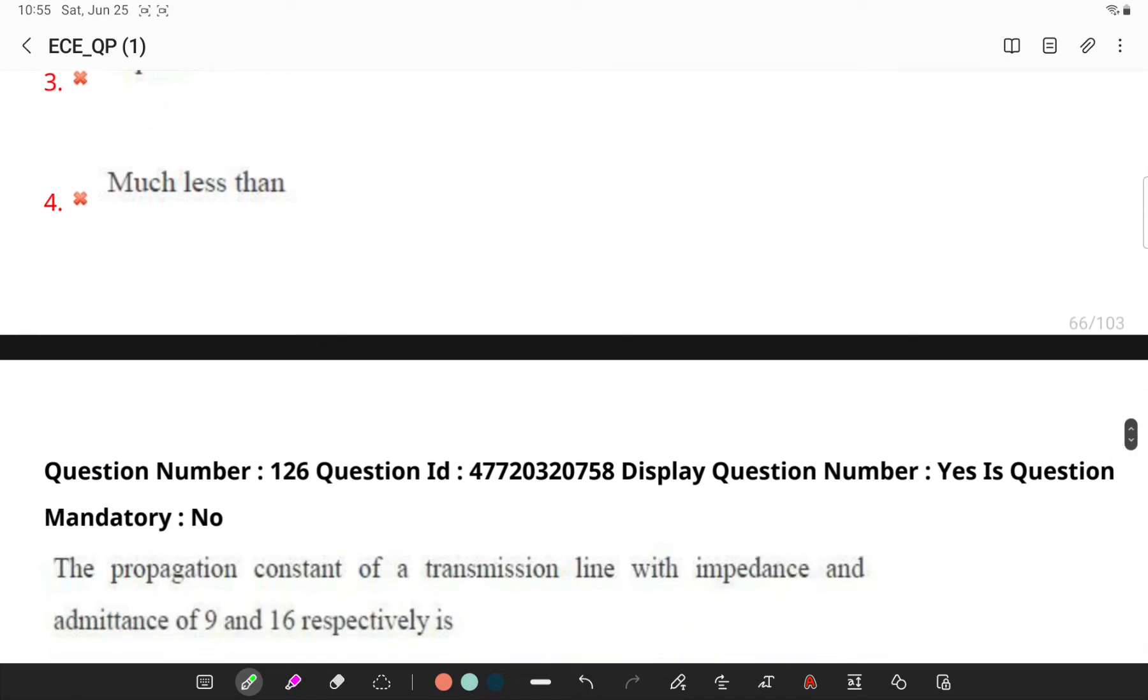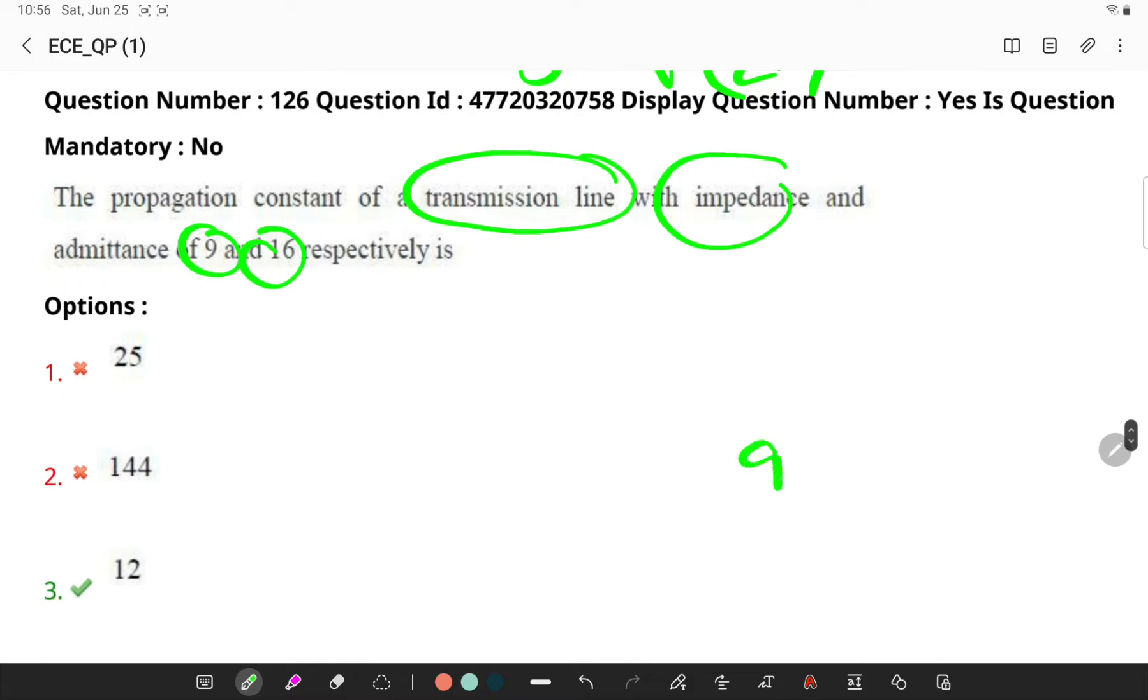Next, the propagation constant of a transmission line with impedance and admittance is - remember gamma, the propagation constant is the product of square root under Z into Y, in this case 9 into 16, under square root. So here it is nothing but 3 square into 4 square. I can simply write as 12.